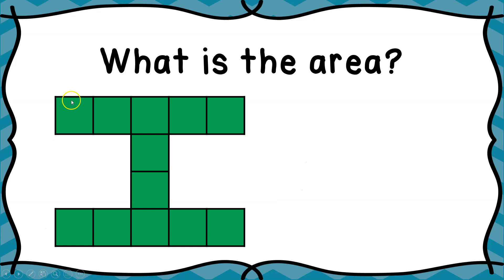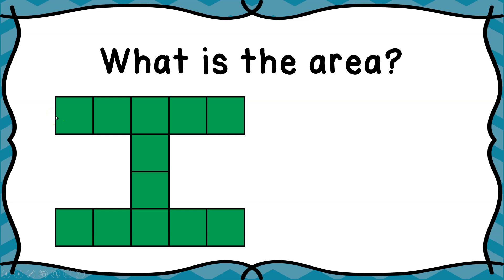You can find the perimeter here: one, two, three, four, five, six, seven, eight, nine, ten, eleven, twelve, thirteen, fourteen, fifteen, sixteen, seventeen, eighteen, nineteen, twenty, twenty-one, twenty-two, twenty-three, twenty-four, twenty-five, twenty-six. So even though the area of this particular shape was twelve square units, the perimeter is twenty-six units.